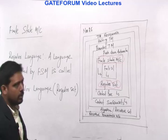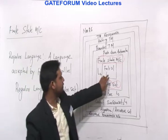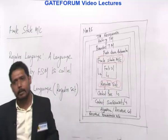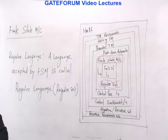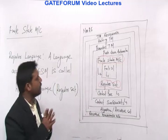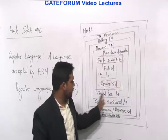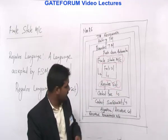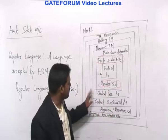From the Chomsky hierarchy, there is a containment property: anything that is finite is regular. Finite sets are contained in the regular sets. Anything that is finite is always regular, but every regular set is not finite. Similarly, anything regular is context-free, but anything context-free may not be regular. All regular languages are context-free, but not all context-free languages are regular.